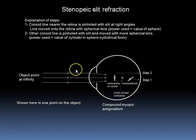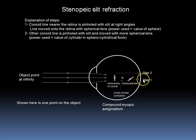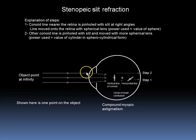The Stenopaeic Slit is rotated to give the clearest vision. This will occur when it is at right angles to the horizontal line closer to the retina. We will then change the sphere of lens correction in front of the patient to give the clearest vision, which will occur when this horizontal line that is pinholed is moved onto the retina. We then rotate the Stenopaeic Slit 90 degrees to the original position, which will pinhole the vertical line in this diagram. We then add sphere as necessary to further clear up the vision, which will occur when this vertical line is placed on the retina.